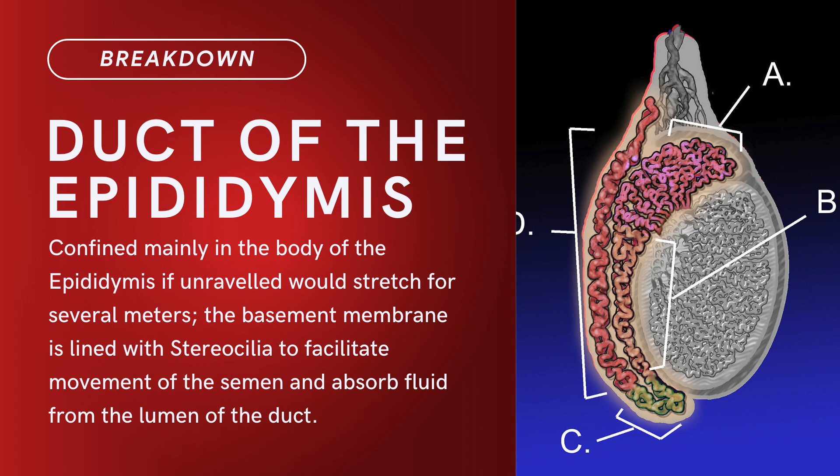Related term: ducts of the epididymis. Brief definition: confined mainly in the body of the epididymis. If unraveled, would stretch for several meters. The basement membrane is lined with stereocilia to facilitate movement of the semen and absorb fluid from the lumen of the duct.